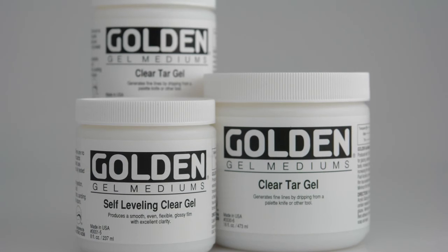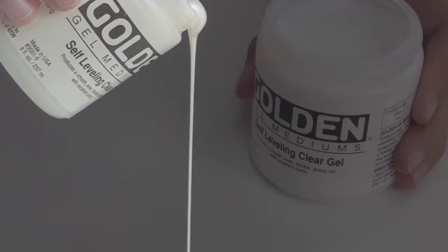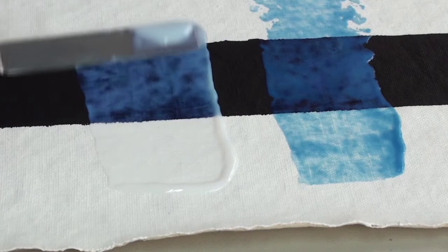The remaining two gels in our line are both pourable, but not as liquid as our fluid mediums. Self-leveling gel is just as the name suggests. It's a pourable, resinous, stringy gel that levels to a smooth surface and doesn't show peaks or brush strokes.